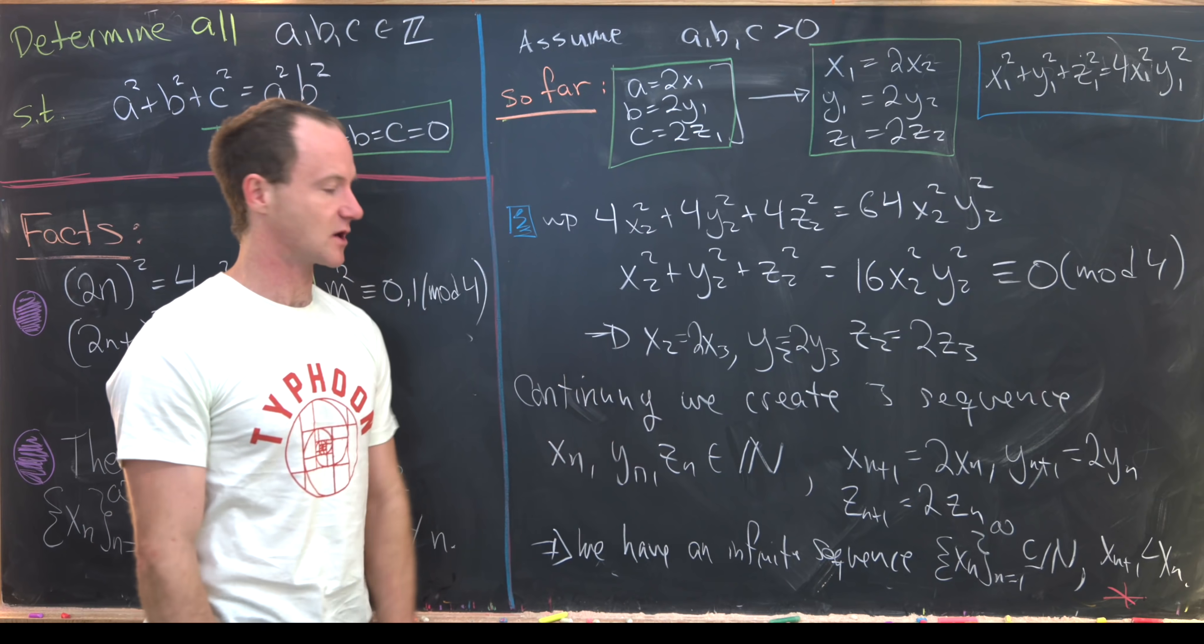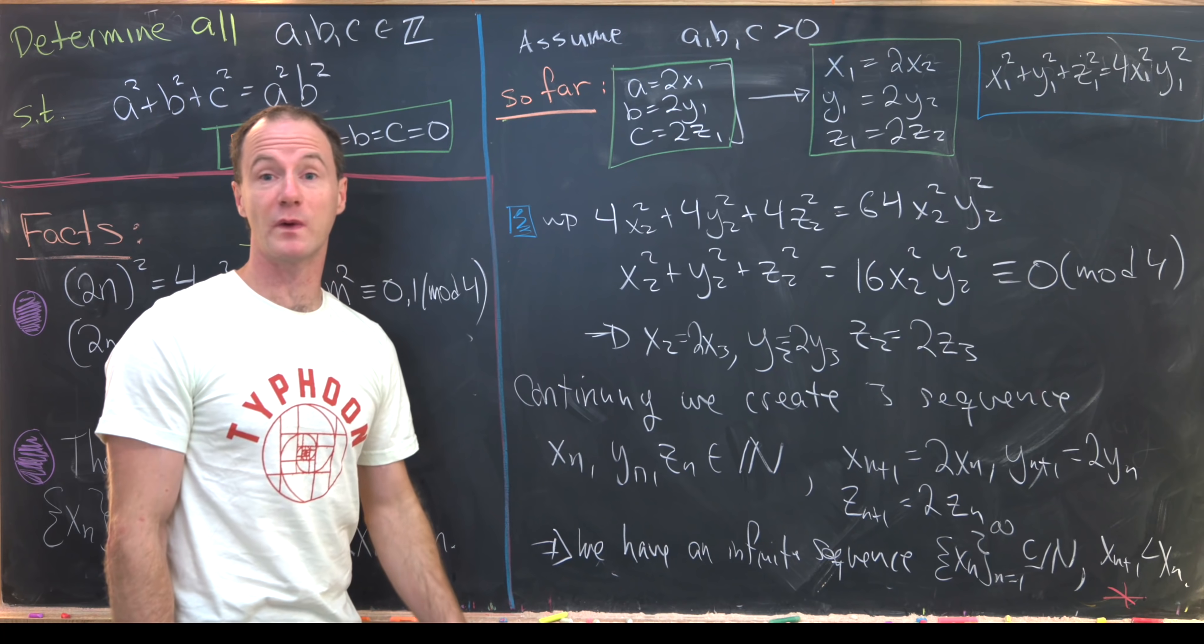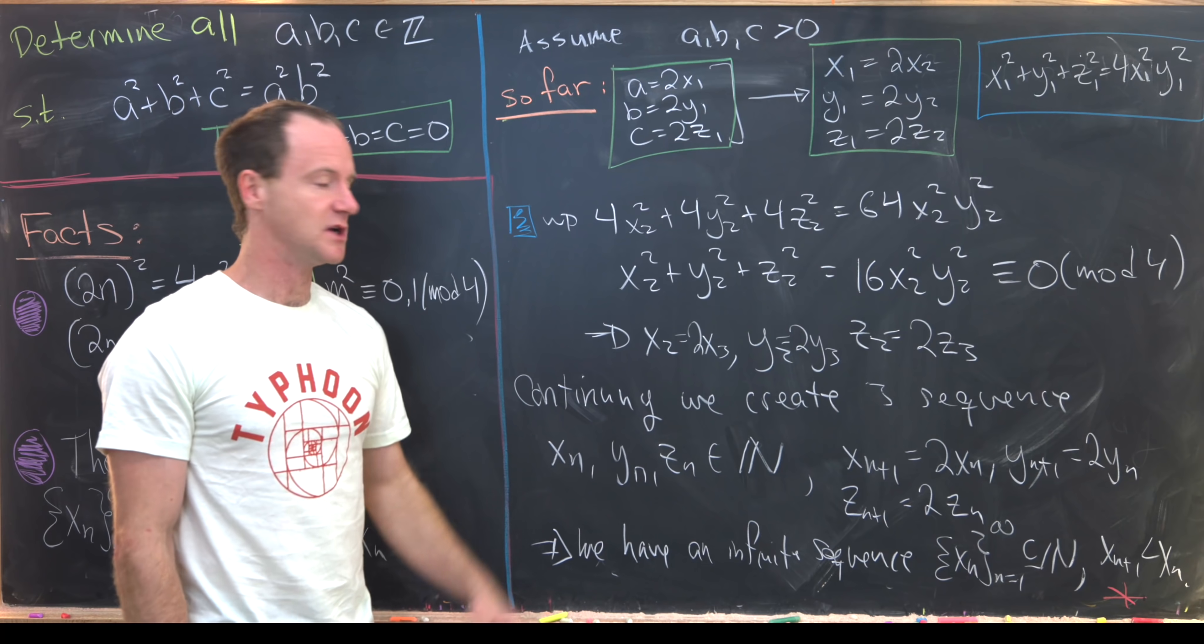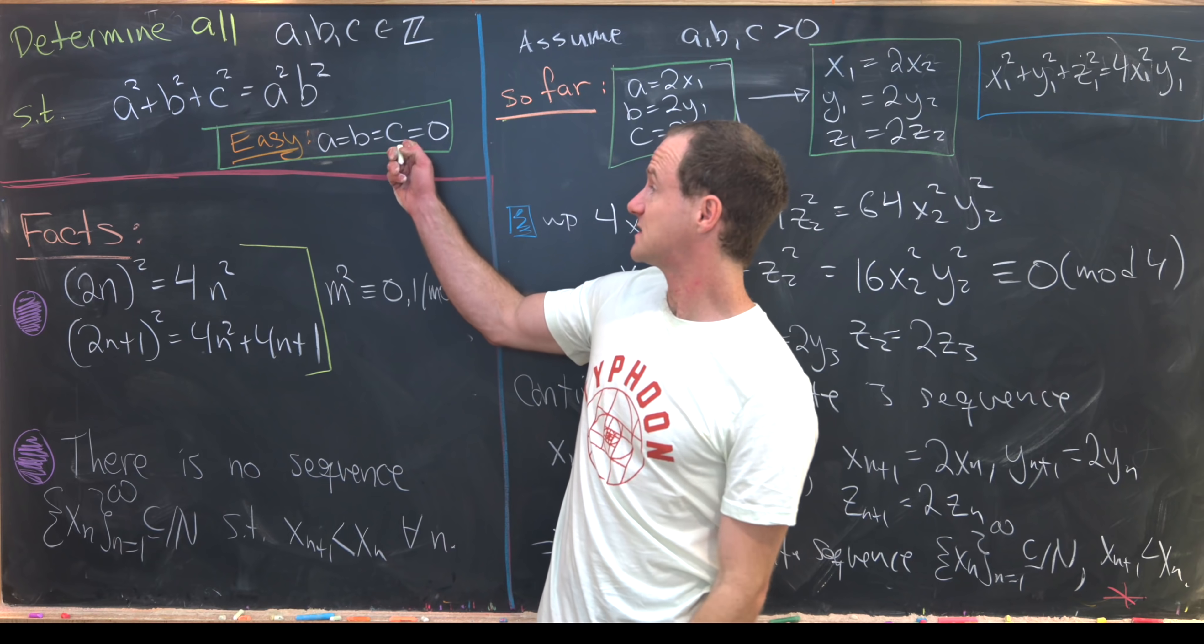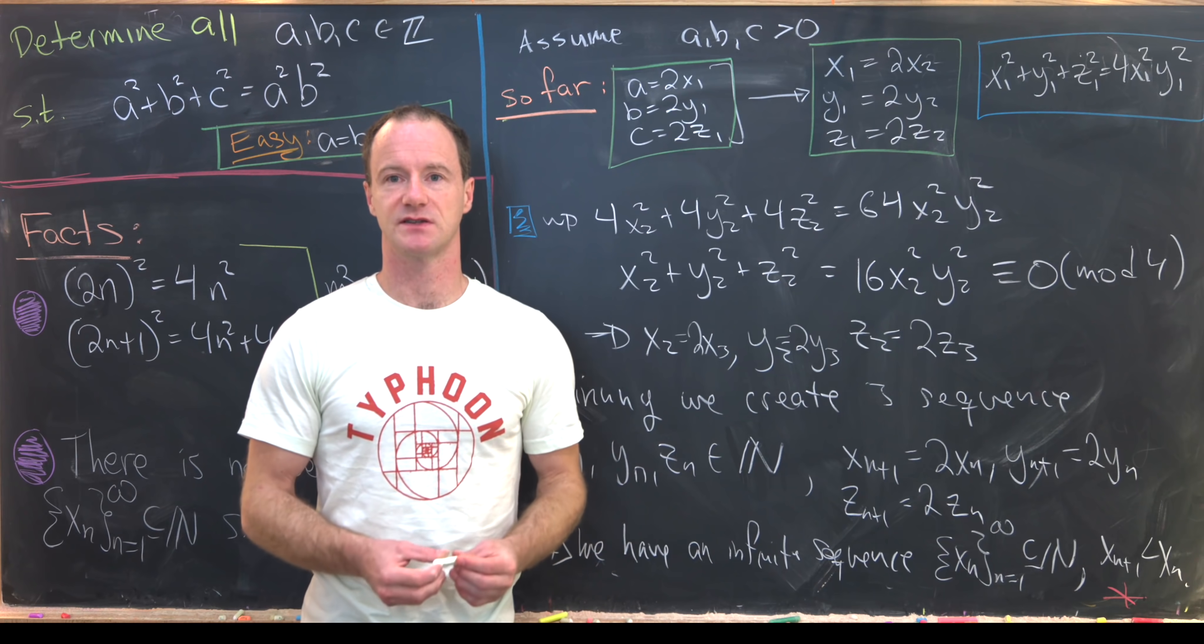And you might say, well, what is our contradiction? Our contradiction started way back up here where we assumed we had a solution that was non-zero. So that means we, in fact, do not have a solution which is non-zero. And thus, this easy solution is the only solution. And that's a good place to stop.